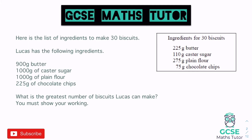We'll check each ingredient to see which one limits us. We're using a calculator. For butter: 900 grams divided by 225 grams needed equals 4. So we could make four batches. For caster sugar: 1000 grams divided by 110 grams equals approximately 9.09 — but we're already limited to four by the butter, so that's fine.